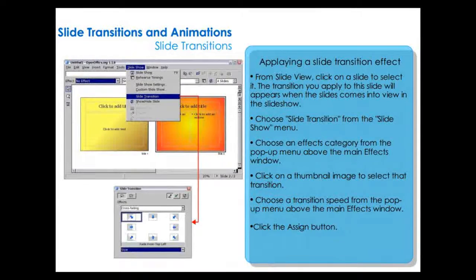To apply a slide transition effect, from Slide view click on the slide to select it. The transition you apply will appear when the slide comes into view in the slideshow. Choose Slide Transition from the Slideshow menu. Choose an effect category from the pop-up menu above the main effects window, then click on the thumbnail image to select the transition. Choose a transition speed from the pop-up menu, then click the Assign button.